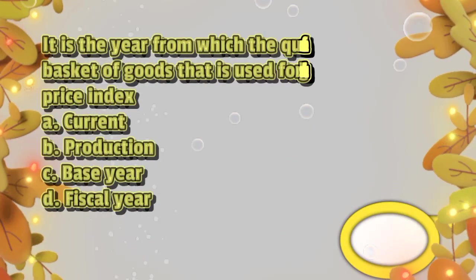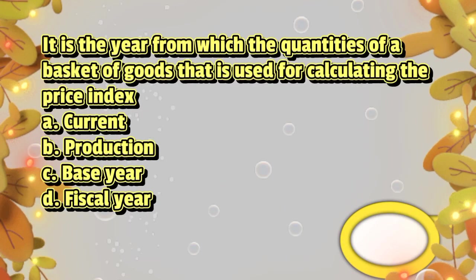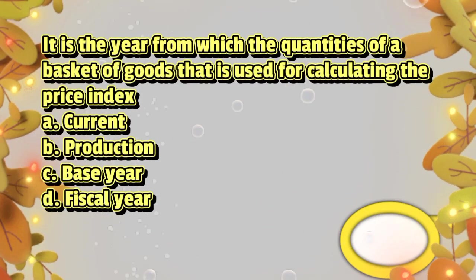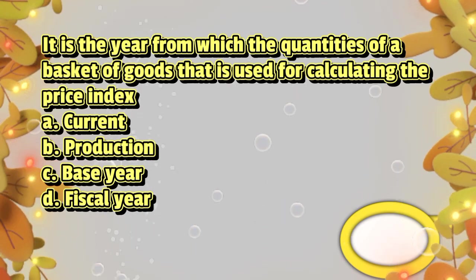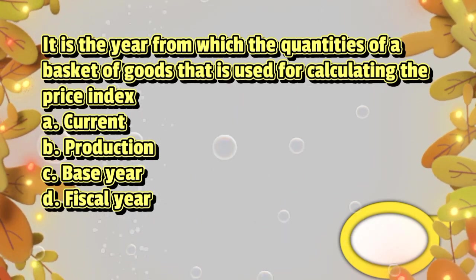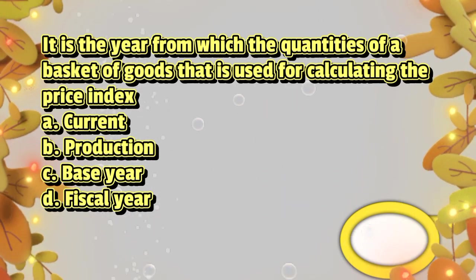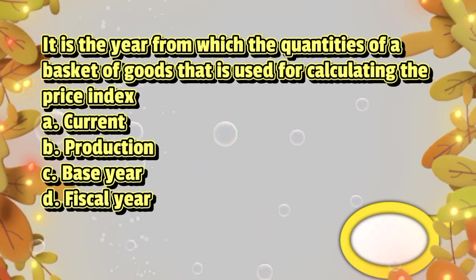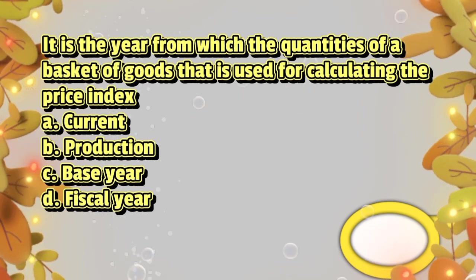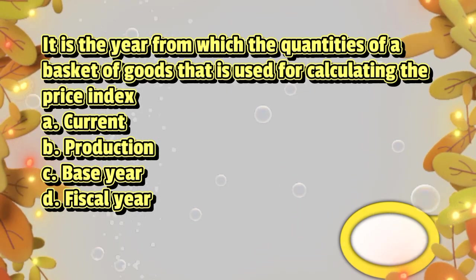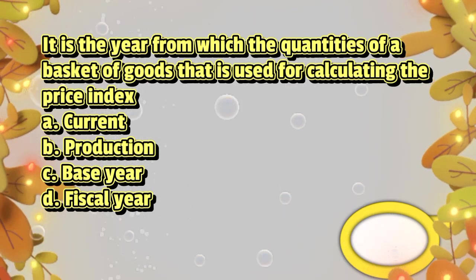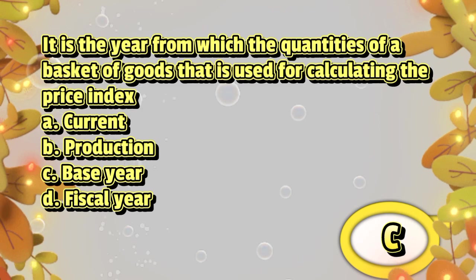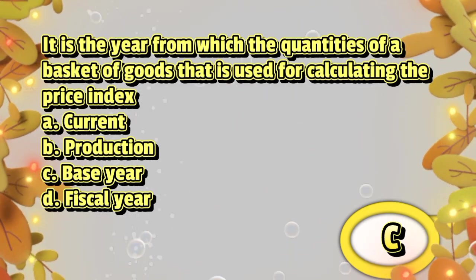It is the year from which the quantities of a basket of goods that is used for calculating the price index. A. Current. B. Production. C. Base year. D. Fiscal year. The answer is letter C.